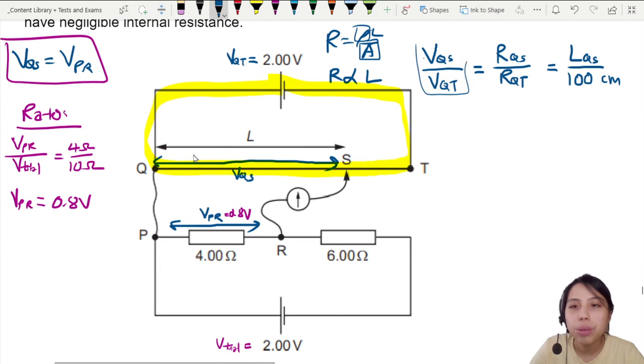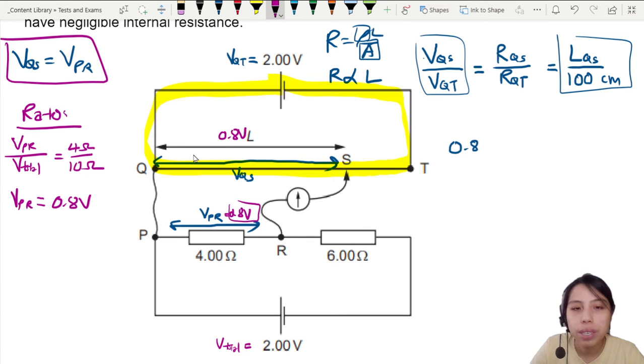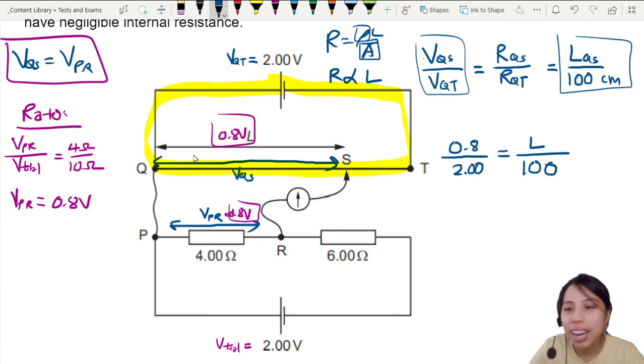So in the end of the day, I know this. I want to find this. So I can just say okay. So voltage of QS is going to be 0.8. How do I know that? Because 0.8 volt up there, 0.8 volt down here is balanced. So 0.8 over the total, which is 2 volts in that loop, equals to the length L over 100. This is the ratio we must understand.